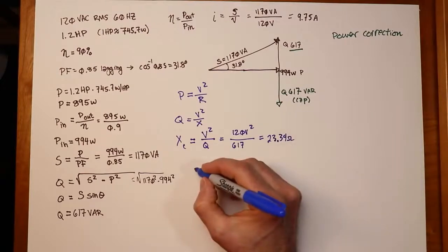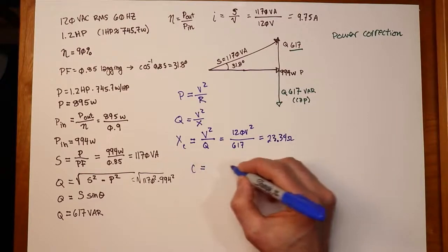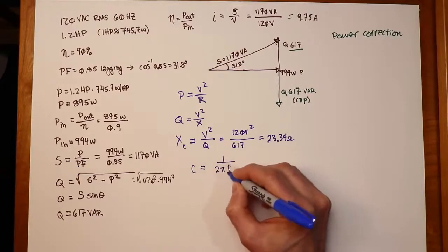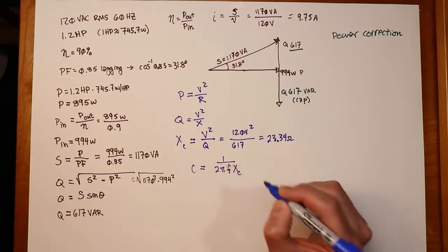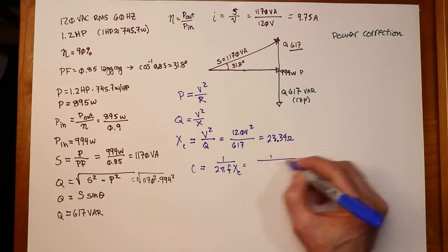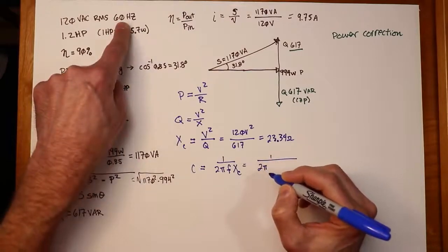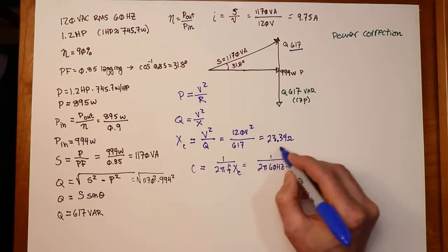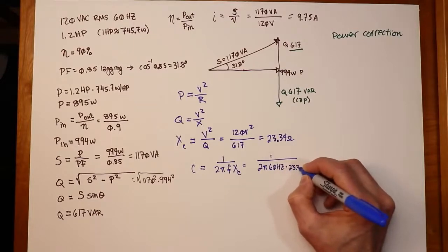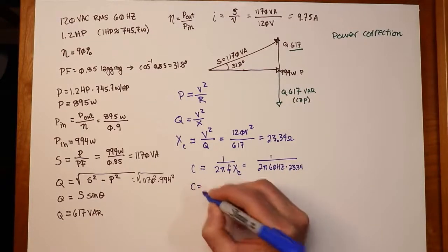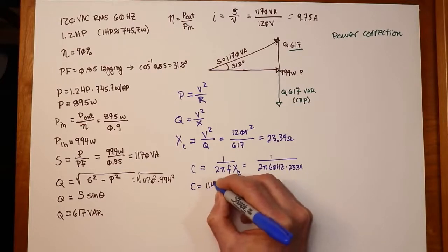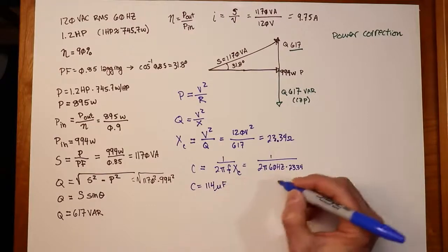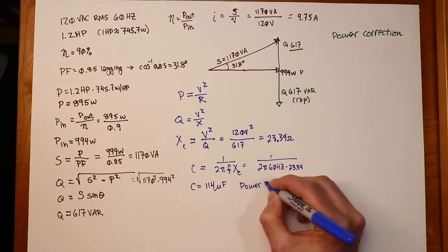Great. Now we can use our capacitor equation, for the X sub C, just going to rearrange this a little bit, 1 over 2 pi F times the X sub C. So, you plug your values in here, 2 pi F. That was 60 hertz, standard line frequency. Times the X sub C, which we just found to be 23 and a third, roughly. And C will turn out to 114 microfarads. So, that's what we need for power factor correction. That's what we need for power factor correction.